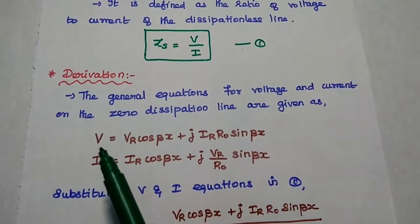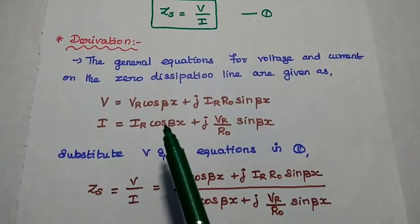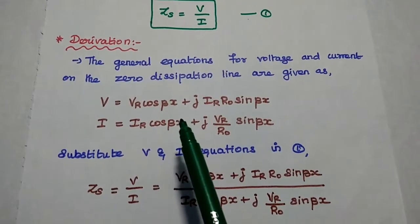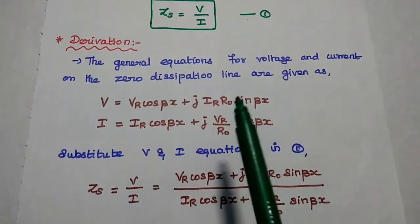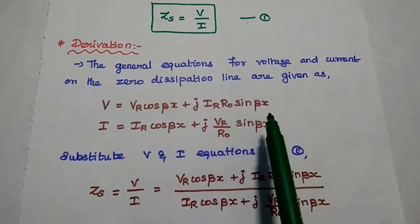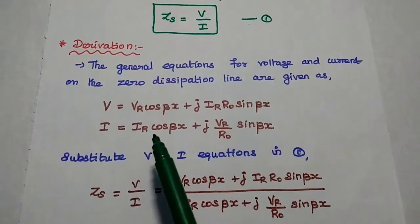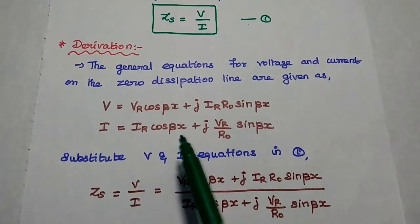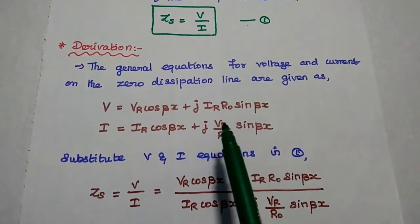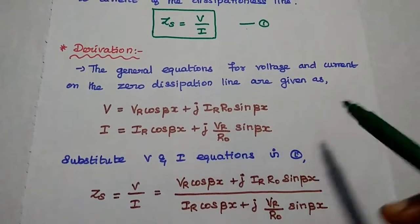Here the general equation for voltage V is equal to Vr cos(βx) plus j·Ir·r0·sin(βx). And I is equal to Ir·cos(βx) plus j·Vr by r0·sin(βx).